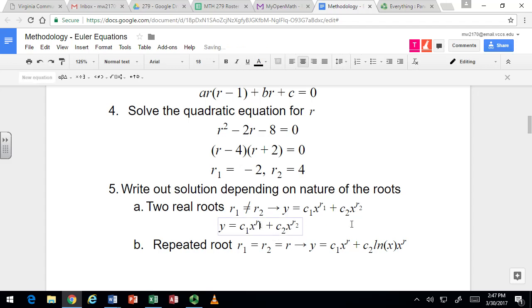So for this problem it would be c1 x to the negative 2 plus c2 x to the 4. So then a combination of rational and polynomial. And you can find c1 and c2 using the initial conditions. We will do that with at least one of these.